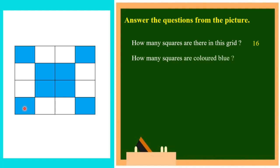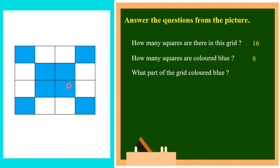How many squares are colored blue? Counting 1 through 8 — so there are 8 squares colored blue. What part of the grid is colored blue? There are totally 16 squares, and out of 16 squares, only 8 squares are colored blue. So the answer is 8 by 16 parts of the grid colored blue.